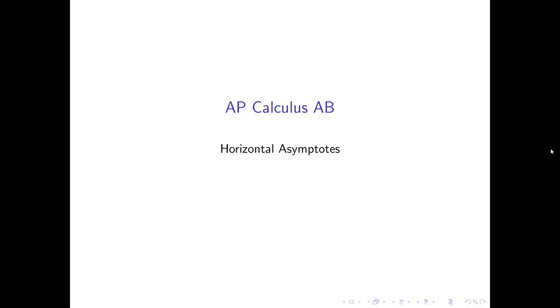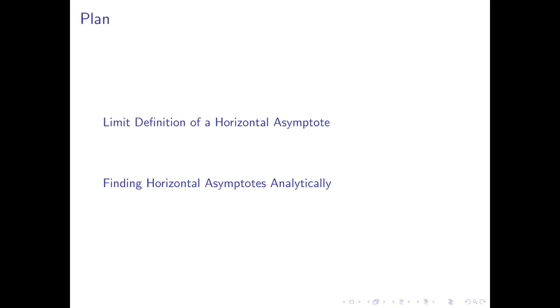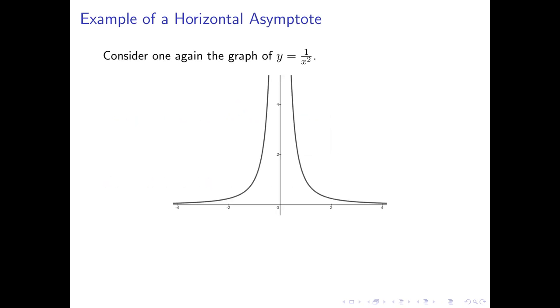In this lesson, we're going to take a look at horizontal asymptotes, which is something else we can study by using limits. Just like with vertical asymptotes, we'll begin by taking a look at a limit definition of a horizontal asymptote, and we'll look at a method for finding these analytically. Let's begin with our limit definition, and we'll start with an example using the 1 over x squared function.